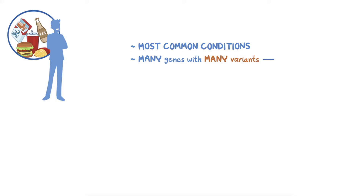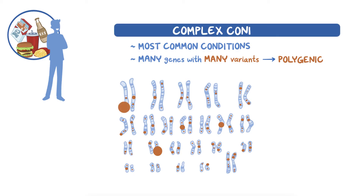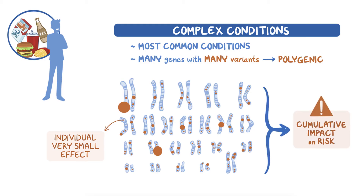The term polygenic is used to describe the genetic component of these conditions. In complex conditions, each individual genetic variant has a very small effect, but when taken together, they can have a cumulative, measurable impact on risk.